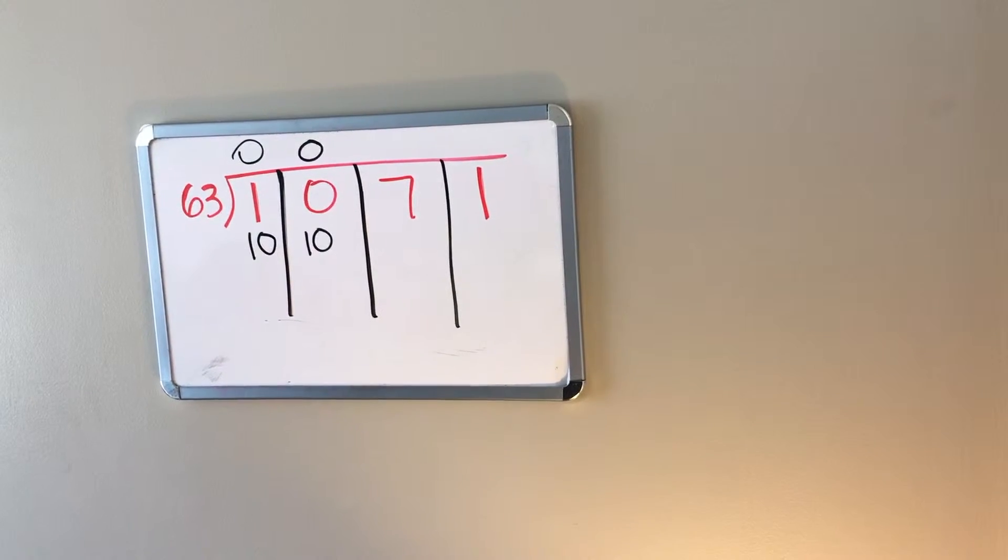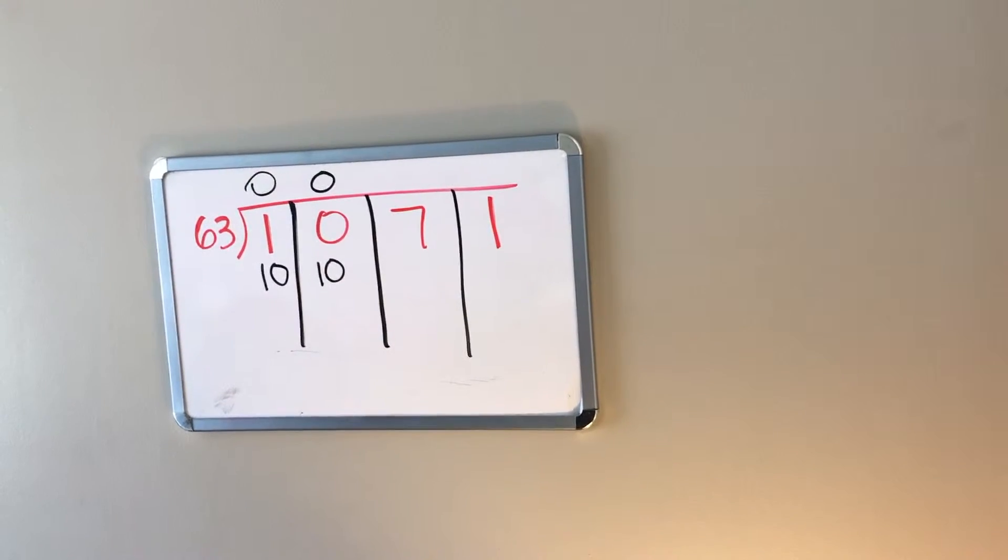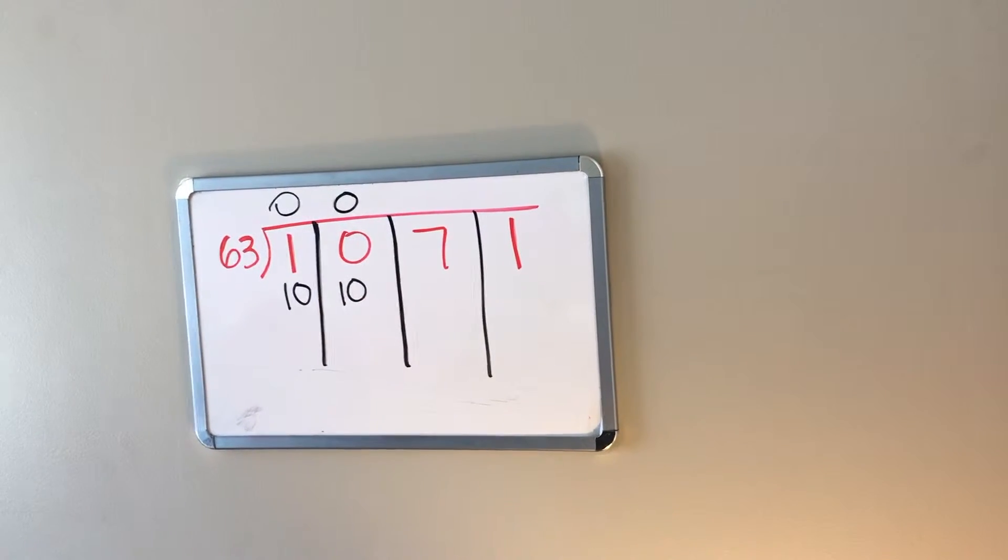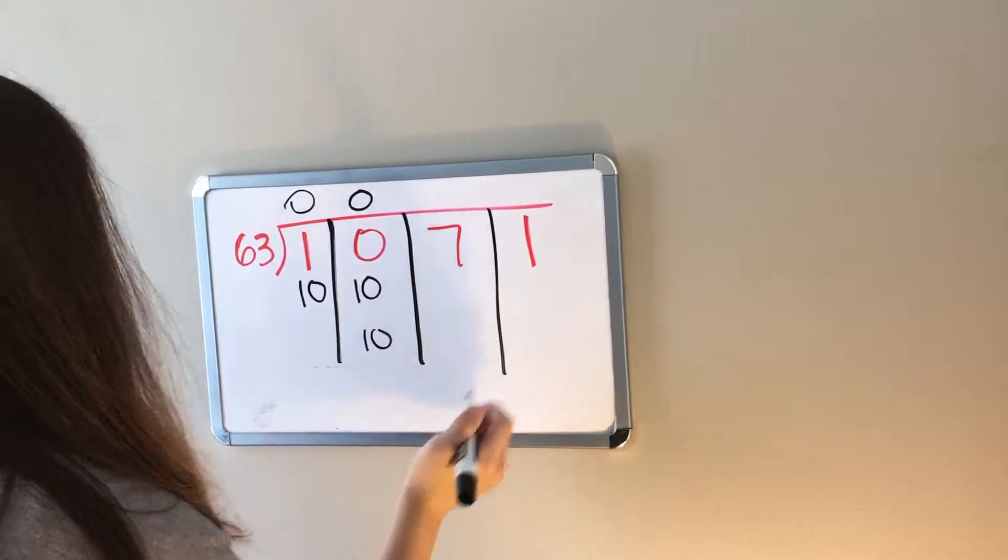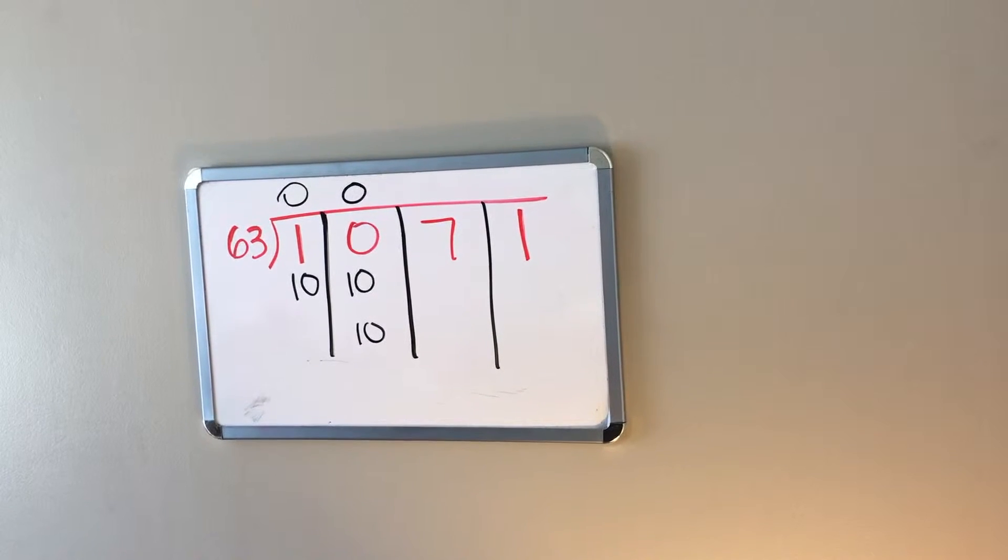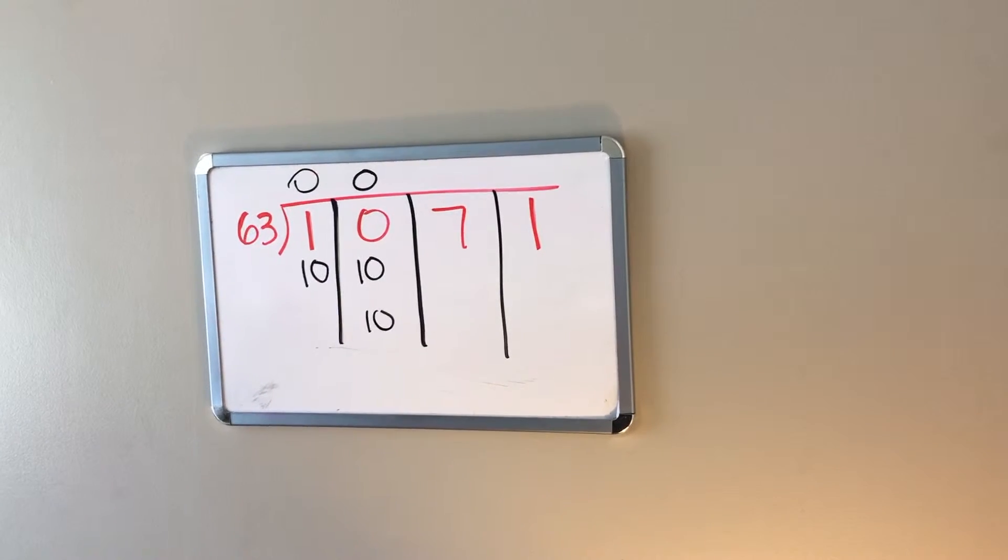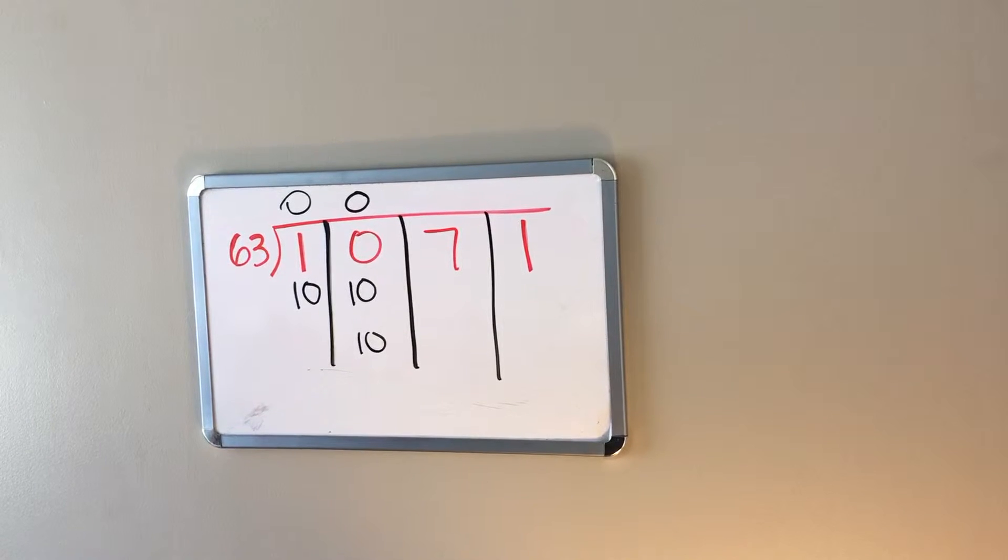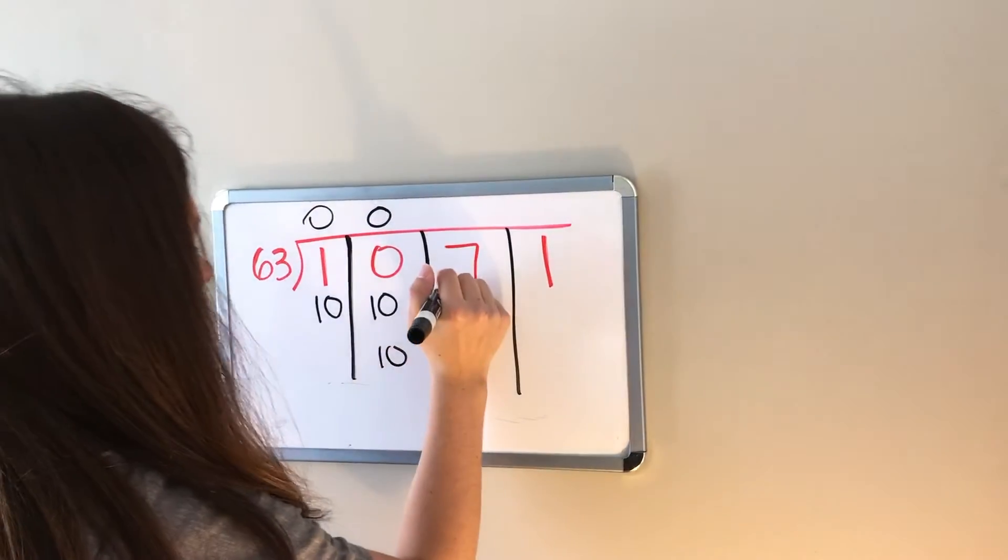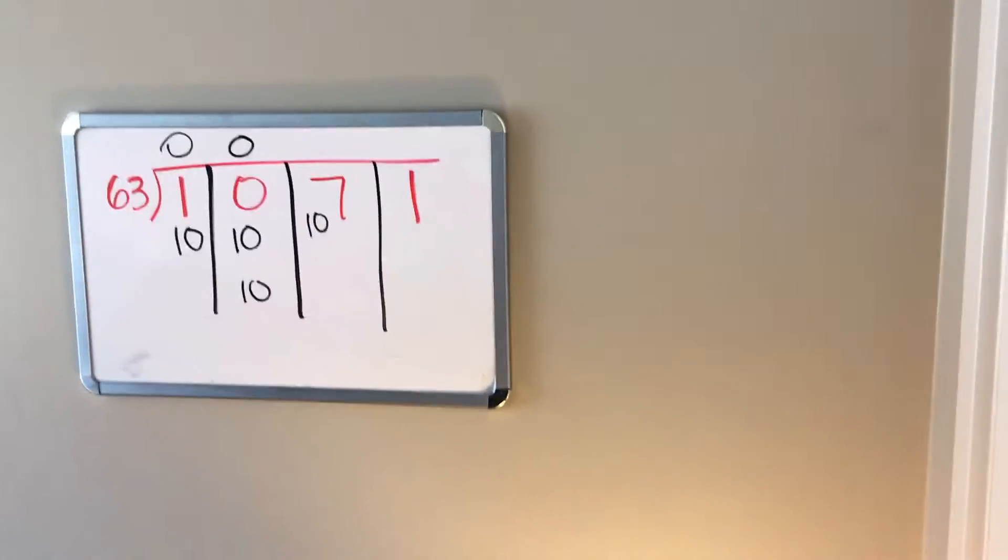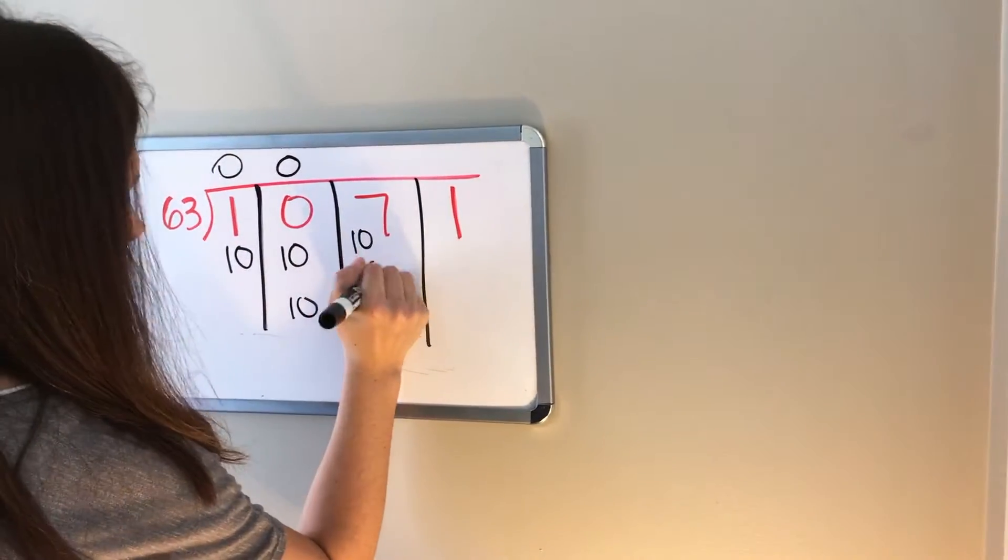So that leaves ten hundreds still left over. Can 63 people get ten things evenly? No, so let's move on to the tens. Each hundred has how many tens in it? Ten, right? So ten tens make a hundred and we have ten of those. Ten tens, that means that we have ten tens plus seven more makes 107 here, or 107 tens.